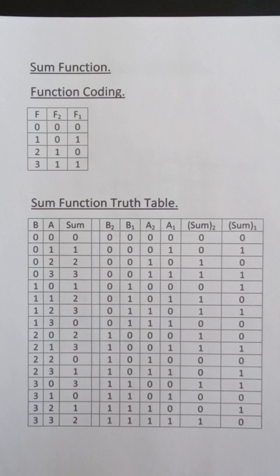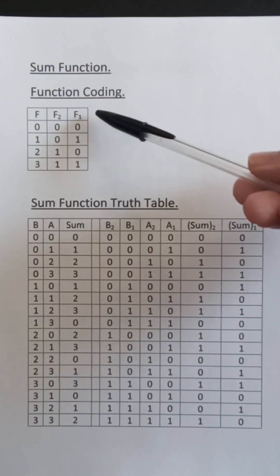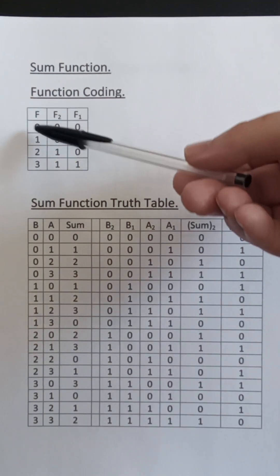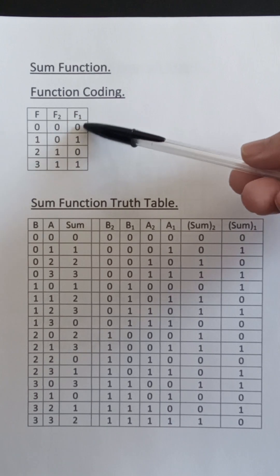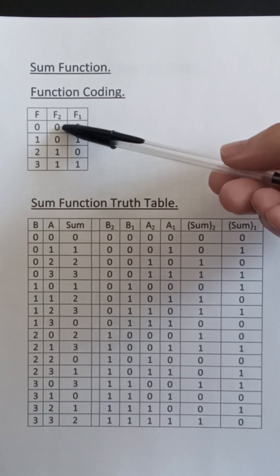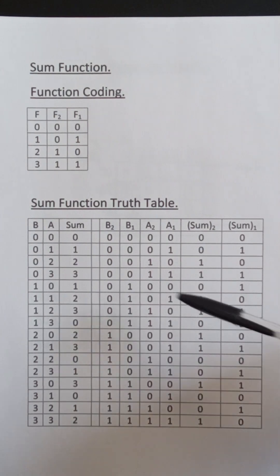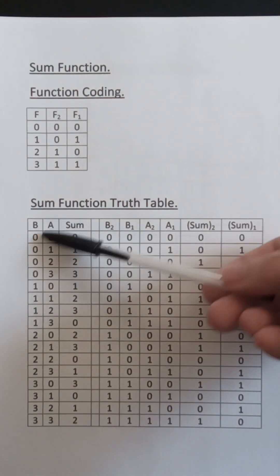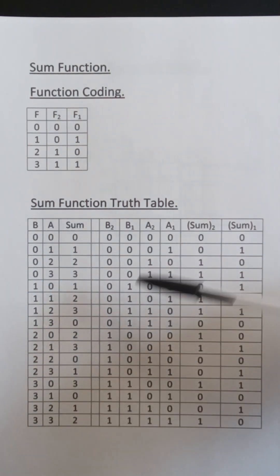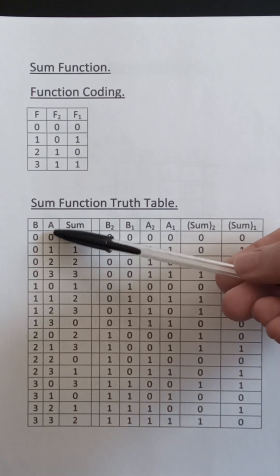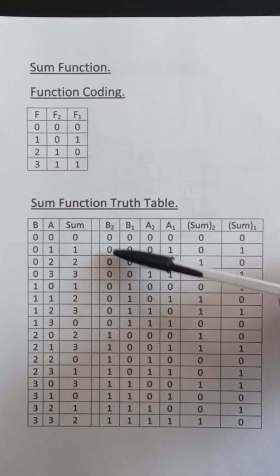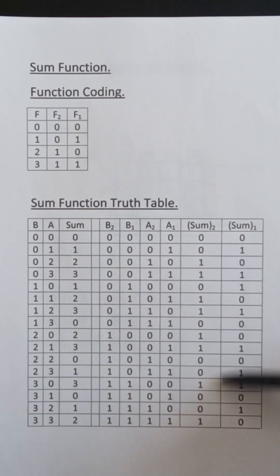Here we have the sum function. This is the coding that I'm using for F0123. F1 equals 0101 and F2 equals 0011. So here is A, B and the sum function. This is A2 and A1 for A here, B2 and B1 for B here and sum2 and sum1 for sum here. So that's the truth table for the sum function.